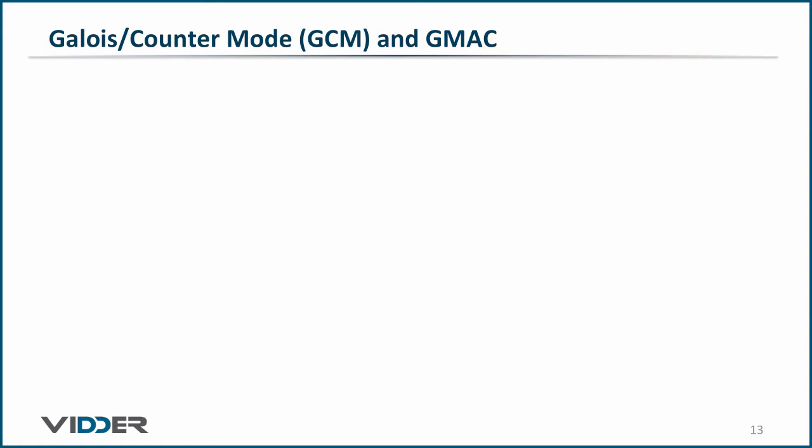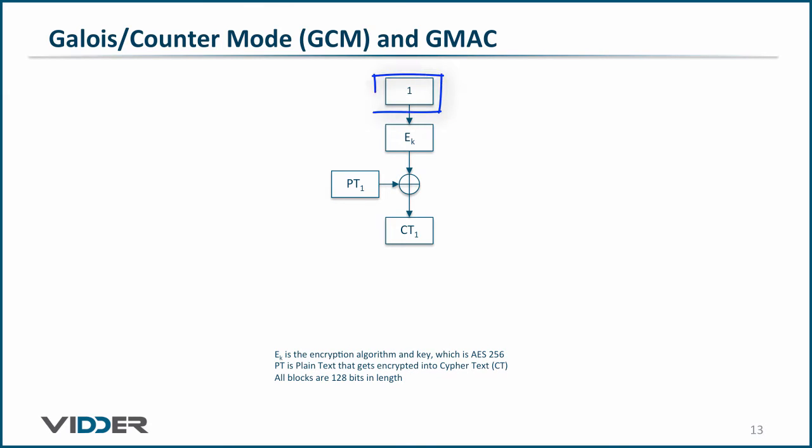Therefore the first block will look like this. Here, the first block value is 1, the E is the encryption algorithm, which in our case is AES-256, encryption using the key k. The output of the encrypted counter is XORed with the block of plain text, and the output is the ciphertext.